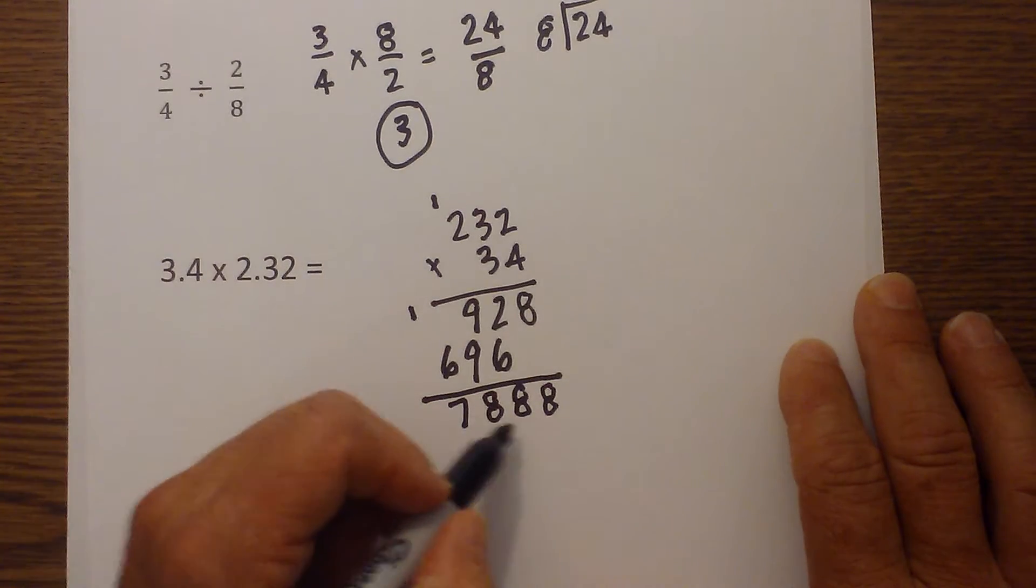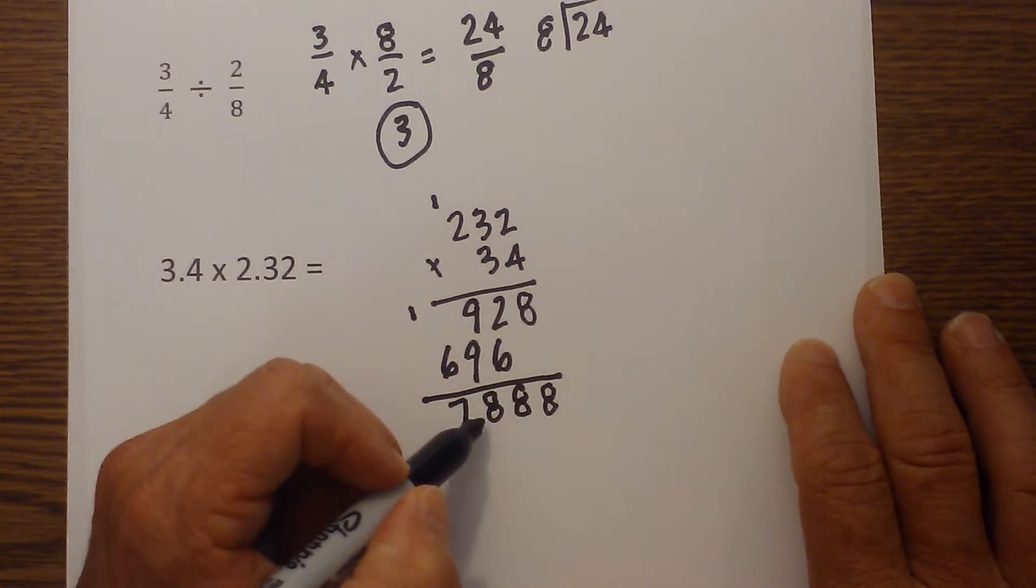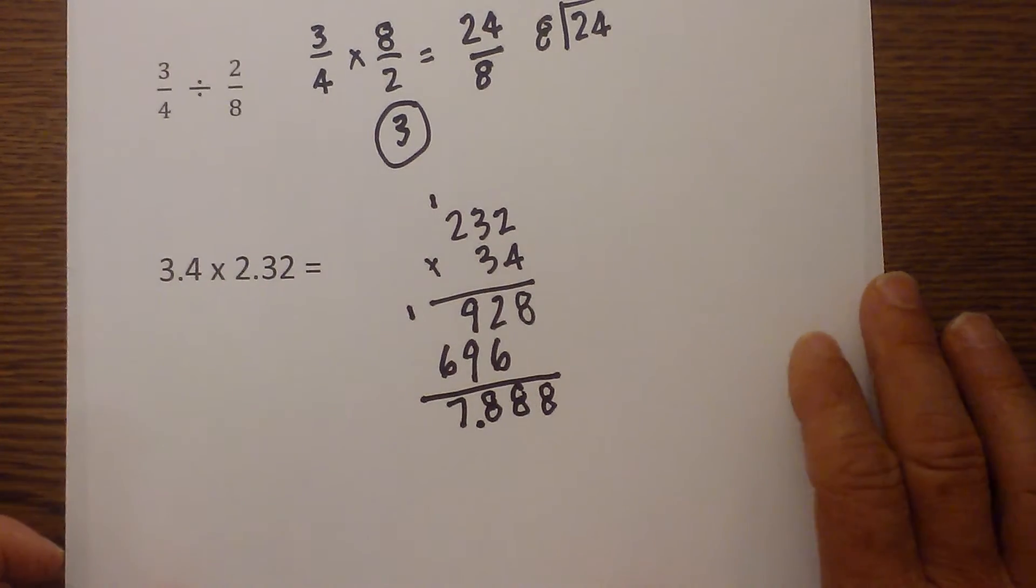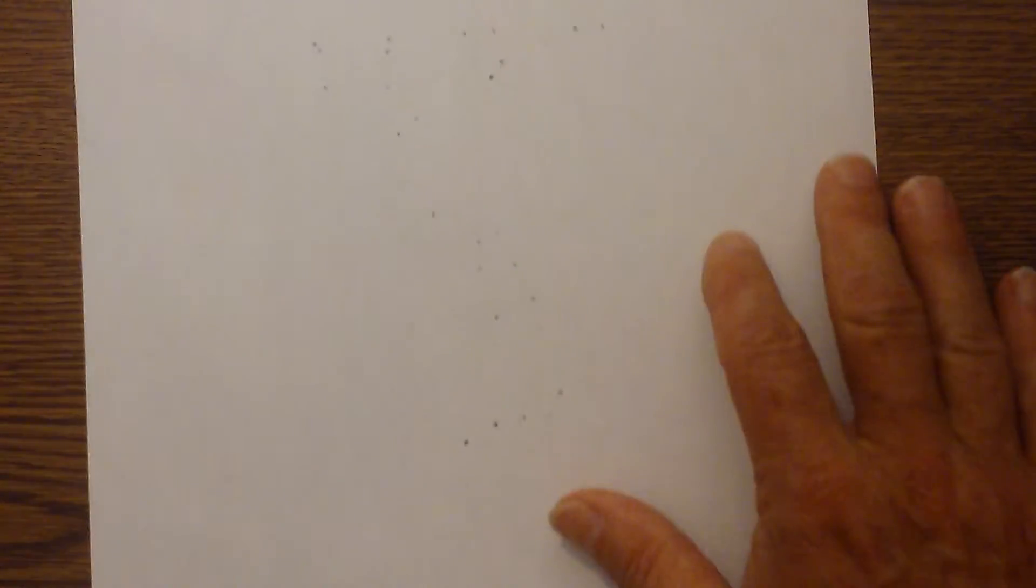And I need 3 decimals to the right. So I go 1, 2, 3. So the answer is 7.888.